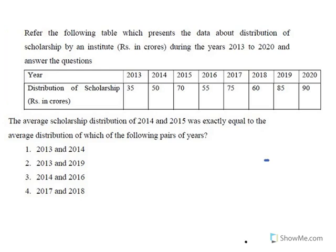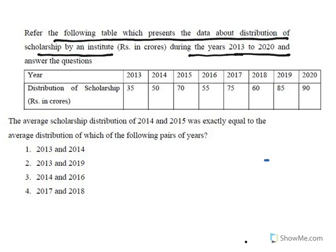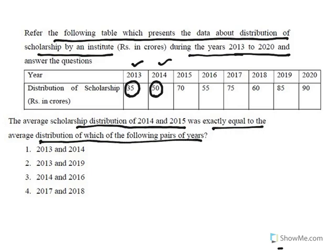The table presents the distribution of scholarship by an institute from 2013 to 2020. During 2013, the institute distributed 35 crores of scholarship; during 2014, 50 crores; and so on. The first question asks: the average scholarship distribution of 2014 and 2015 was exactly equal to the average distribution of which pair of years? In 2014 it is 50 crores, in 2015 it is 70 crores. The average is (50 + 70) / 2 = 60 crores.